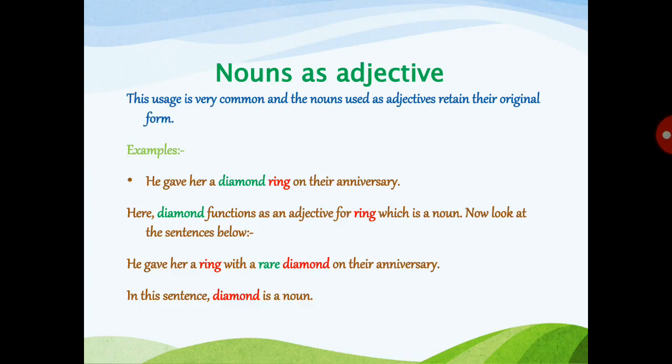Example: 'He gave her a diamond ring on their anniversary.' How was the ring? What kind of ring was it? It was a diamond ring. When you ask the question 'what kind of,' it becomes very easy to identify nouns used as adjectives. Here 'diamond' functions as an adjective for 'ring,' which is a noun.